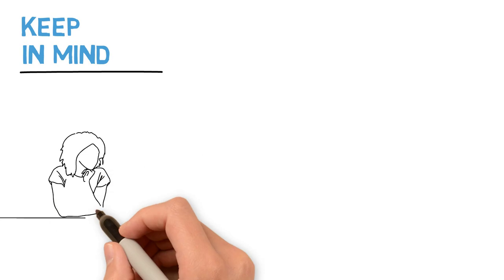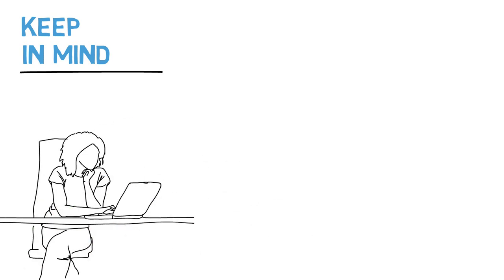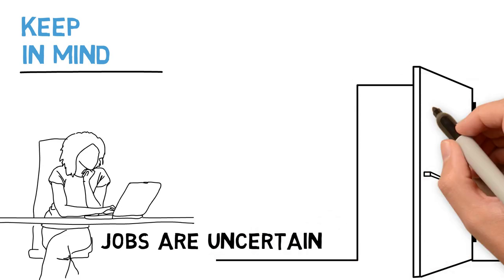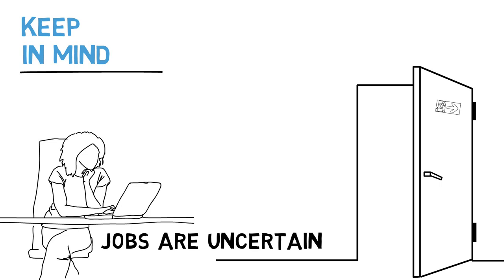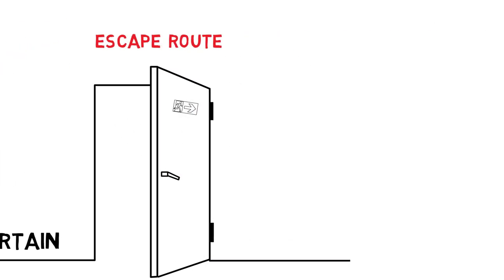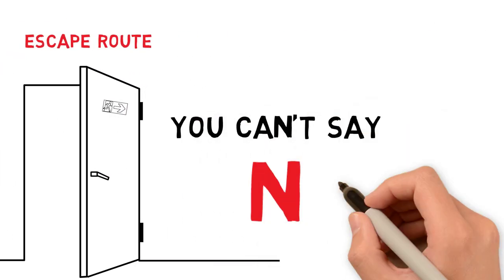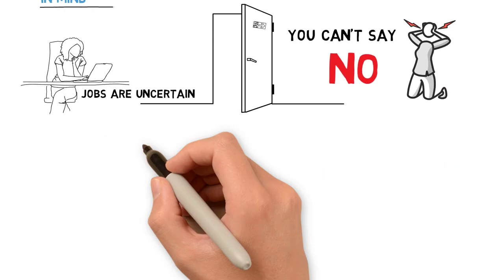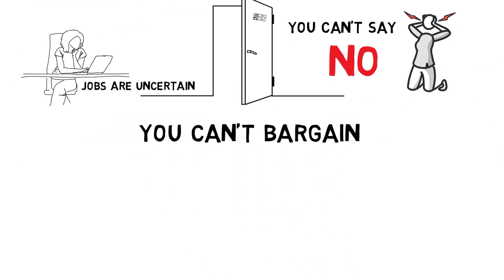Whenever you're working, and you will be, especially in the world of today where jobs are relatively uncertain, you should always have an escape route planned. And it should be active, because if you don't have an escape route, and you can't get away, you can't say no. And if you can't say no, you can't bargain. And if you can't bargain, you're a slave.